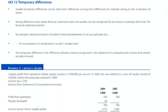Considering these temporary differences a little more: taxable temporary differences can be short-term or long-term differences, for example arising on the revaluation of assets. These timing differences arise where financial statement items are taxable but are recognized for tax reasons in periods other than the financial statement period — because the taxman often works on a cash basis rather than an accruals basis. For example, interest received is included in financial statements on an accruals basis, but for tax purposes it's recognized on a cash or receipts basis. The temporary difference is the difference between interest recognized in the statement of income and interest actually received.